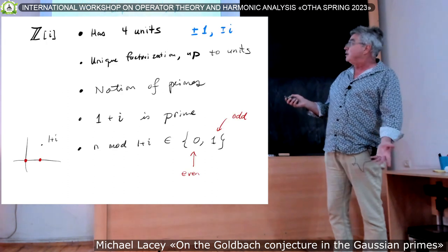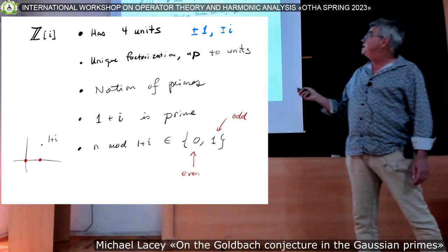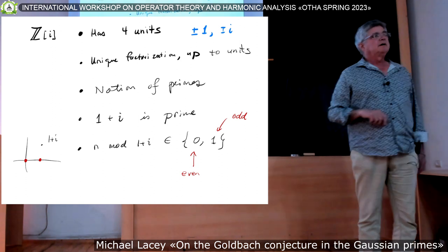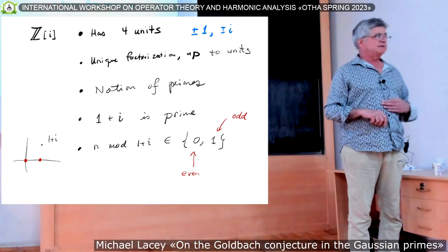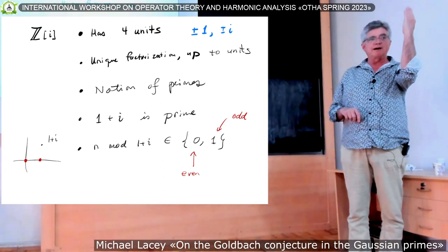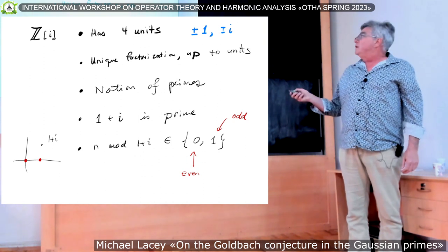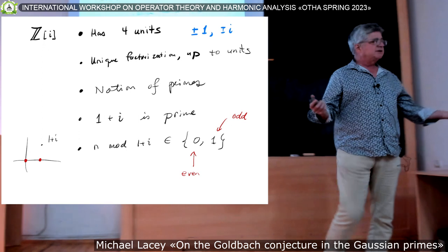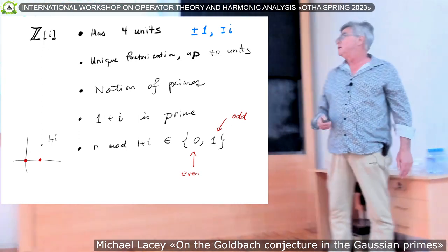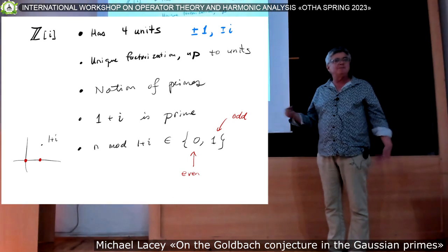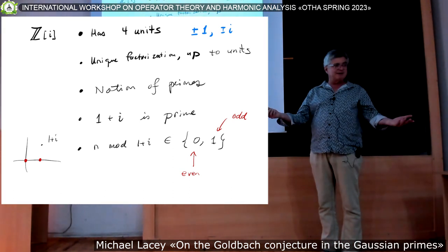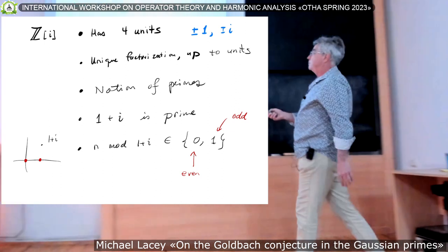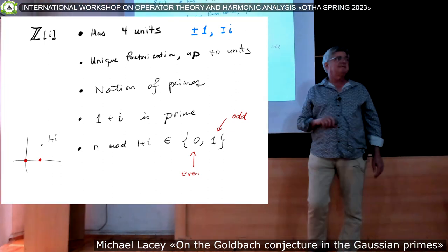So how do we do it? Well, first of all, a little background. So z bracket i, the Gaussian integers, it has four units, the two that we know from z, plus or minus one, two more for the complex i, and minus i. It has a unique factorization, up to units. It has unique factorization, there's a notion of primality. The smallest are the, and from z, from the integers, we know that two is the most unusual prime. The analog in the Gaussian integers is one plus i. It plays the role of two.